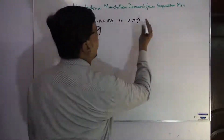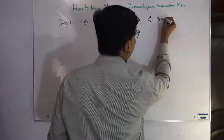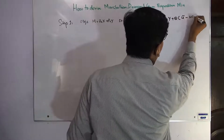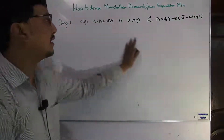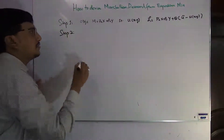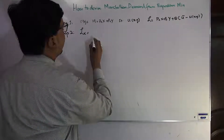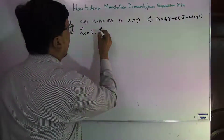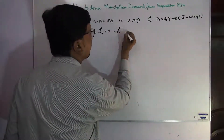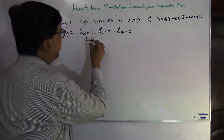In step number two, using these two observations we set up the Lagrange multiplier. The objective function is PxX + PyY, plus theta times the utility constraint. Then we take the partial derivative of our Lagrange multiplier equation with respect to the choice variables and equate to zero: Lx = 0, Ly = 0, and the derivative with respect to theta = 0, giving us equations A, B, and C.